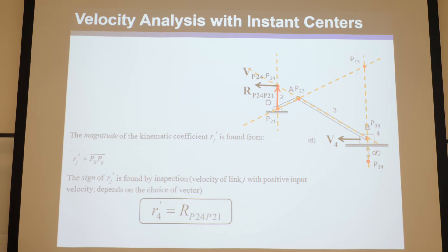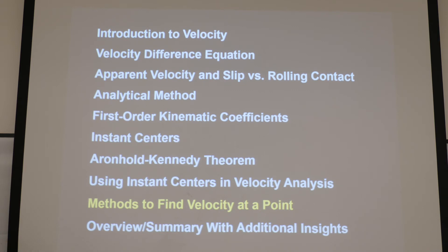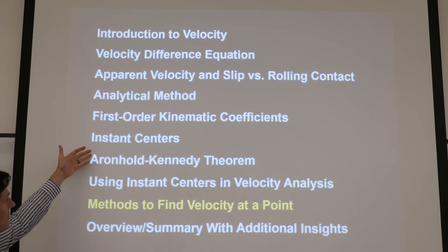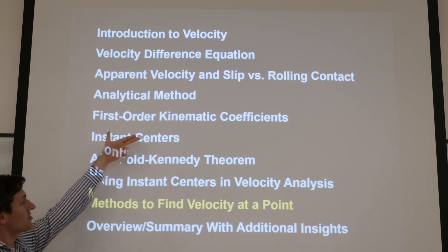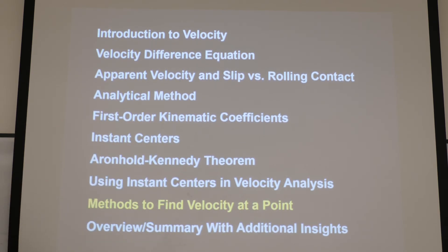Quick review: given a mechanism drawn to scale, first find the number of instant centers using the formula, find the obvious ones at joints, then find non-obvious ones using the Arnold-Kennedy theorem. Once you have all instant centers, apply the two conventions depending on your output type — either a ratio (numerator over denominator) or just the numerator — to determine which distances to measure. Determine the sign by convention or inspection, multiply by the input angular velocity, and you have the output. That's velocity analysis using instant centers — a graphical approach, complementing the analytical method.